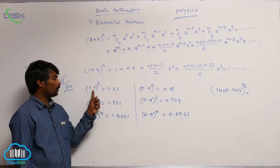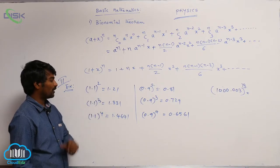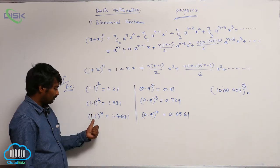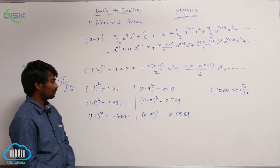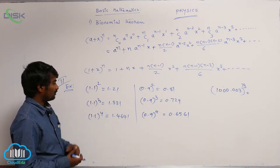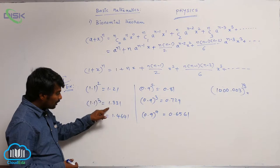It is 1.1 is greater than 1. If you square it, 1.21. If you cube, 1.331. To the power 4, 1.4641. What you have observed, the number is greater than 1. By increasing the power, the value is going on increasing.